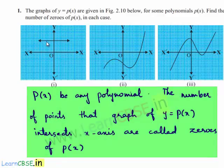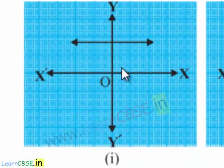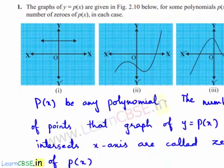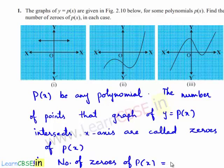In the first case, the graph y equal to p of x does not intersect the x-axis. That means in the first graph, the number of zeros is equal to zero, since the graph does not intersect the x-axis at any point.